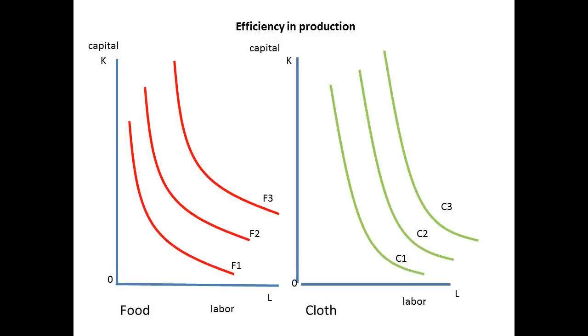F1, F2 and F3 are the isoquant curves for food. And C1, C2 and C3 are the isoquant curves for cloth.